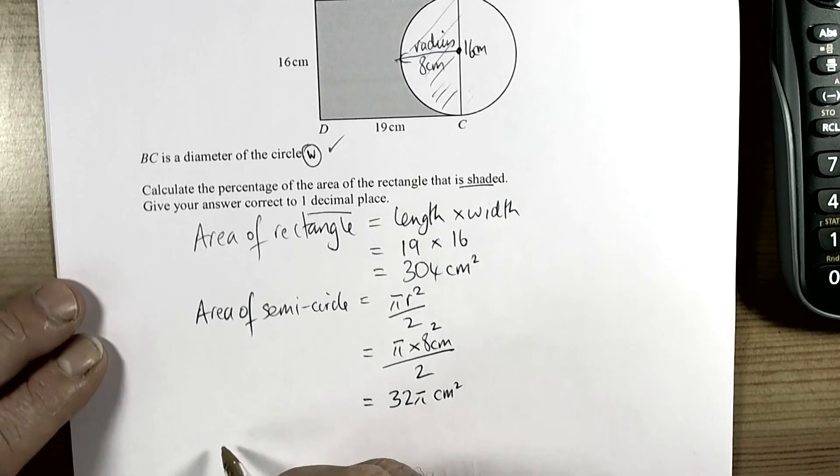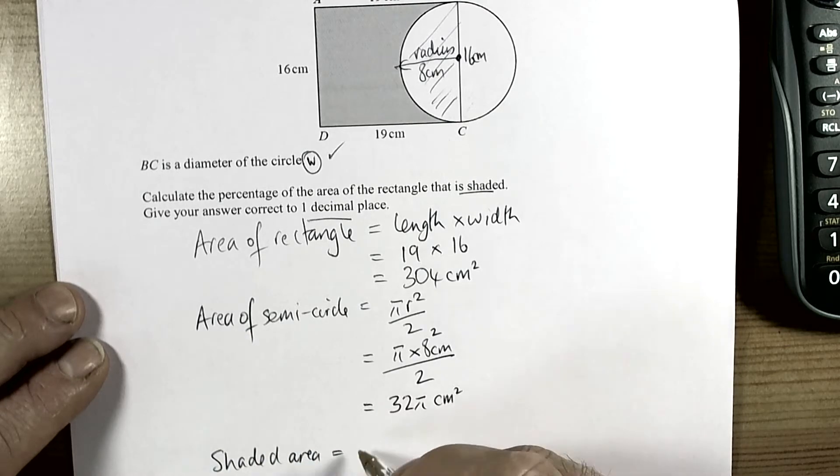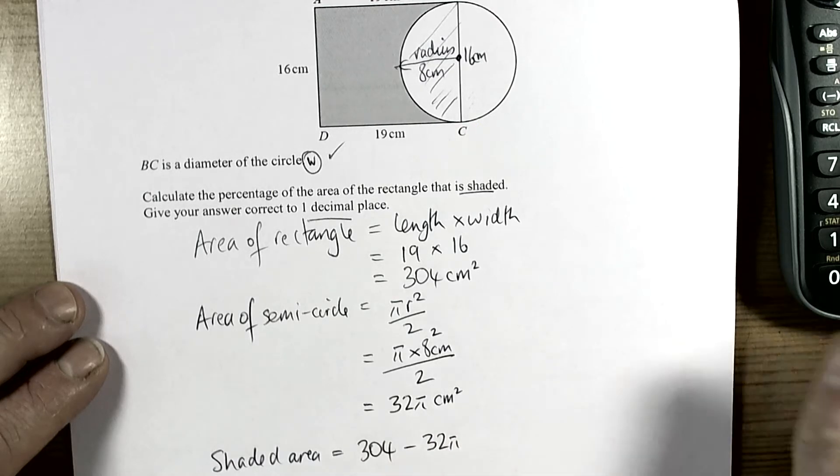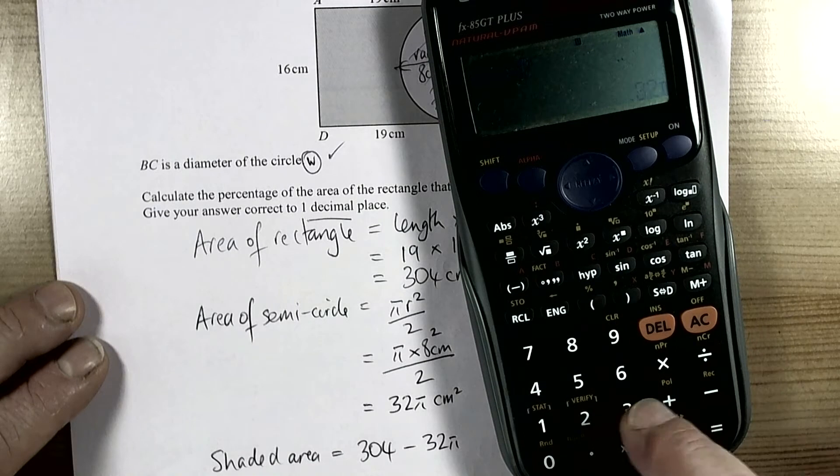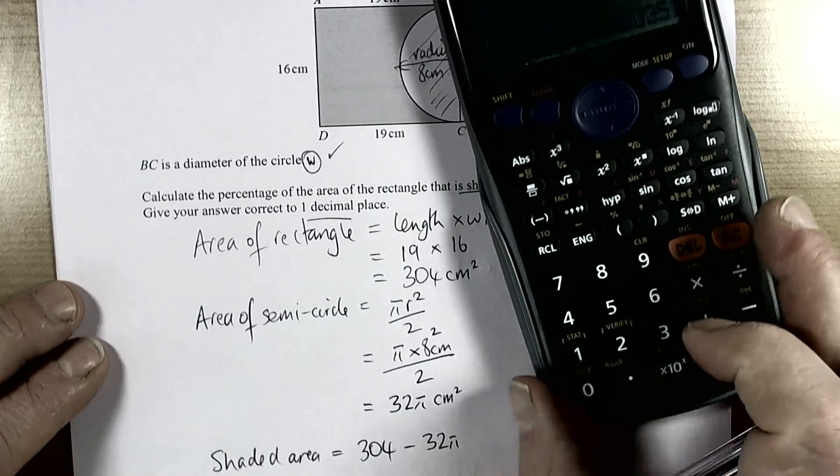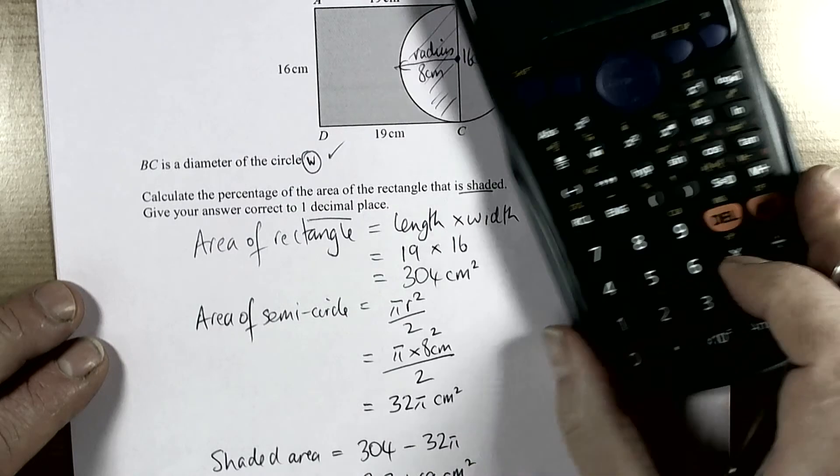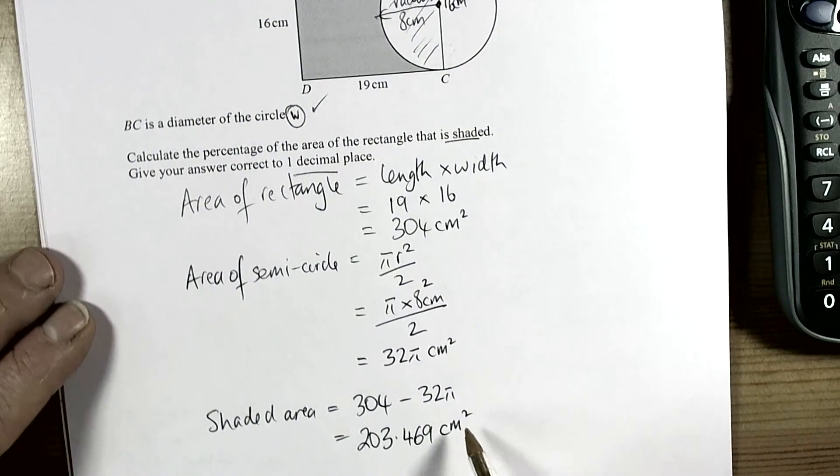Basically we need the shaded area. So shaded area must equal 304 take away 32 pi. So if I just take away 304 and ignore the negative, 203.469 square centimeters. It's not the final answer yet, so don't round too soon.